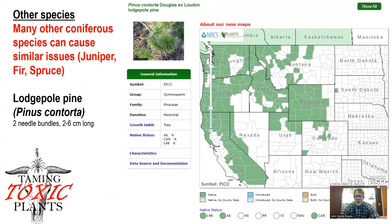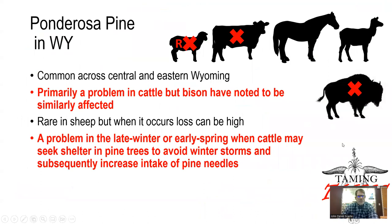Lodgepole pine occurs primarily in the western two thirds of Wyoming and at higher elevations. It doesn't really distribute throughout the southwestern part of the country or in the western Great Plains, but is more predominant in the northwestern part of the country — Washington, Oregon, Idaho, and parts of California. Lodgepole pine tends to be a two-needle pine tree with much shorter needles, only two to six centimeters in length.